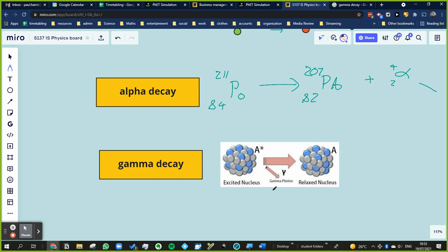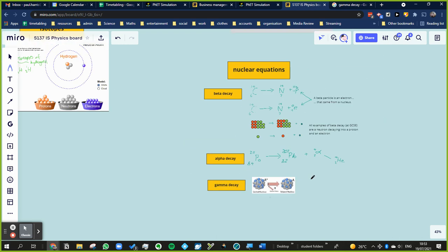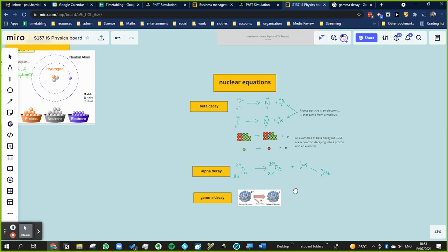If you studied the electromagnetic spectrum, you'd have come across gamma rays before. And it's the electromagnetic waves that is the highest frequency, or the highest energy, or the shortest wavelength. So that's the three types of radiation, three types of decay, and what each radiation is.